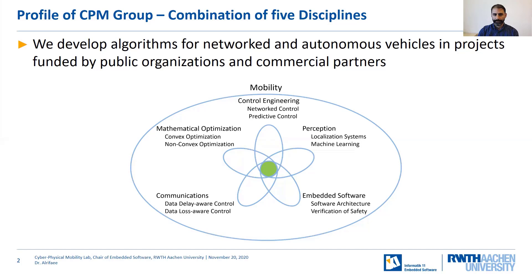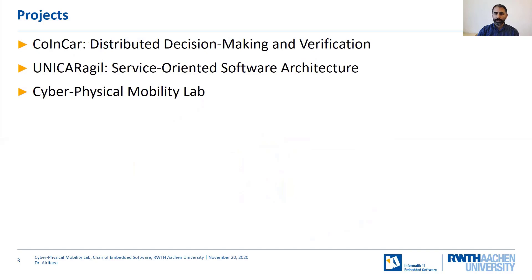Besides other single projects or projects with industrial partners, my group hosts two large projects. The first is the CoinCar project — Cooperatively Interacting Cars. This is a large project funded by the German Research Association, DFG. It is a priority program hosting projects of partners throughout Germany. We conduct two sub-projects in this large project, where we focus on distributed decision-making and verification for trajectory planning of networked vehicles.